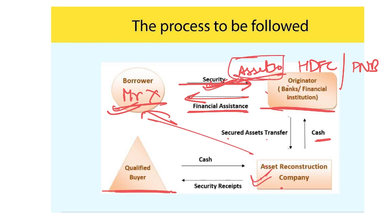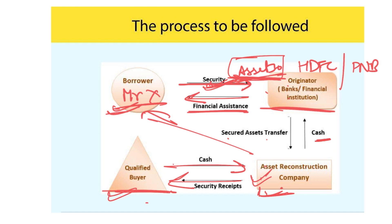The ARC will find a suitable qualified buyer who can take these assets. It will sell the assets via bid or auction, whichever is suitable. The qualified buyer gives cash to the ARC, and the ARC transfers the asset to the qualified buyer. So the process starts with the transaction between the borrower and the bank; in case of default, the bank engages the ARC, and the ARC goes to the market, sells the security assets, and gets cash in return.